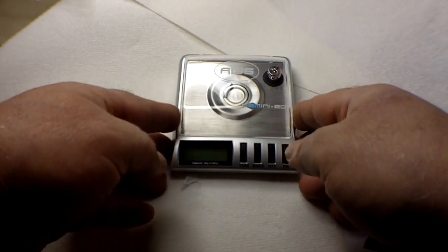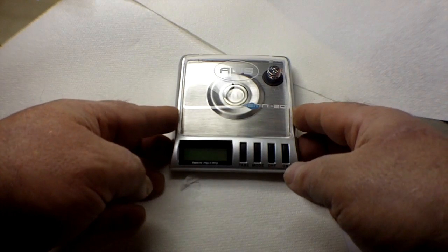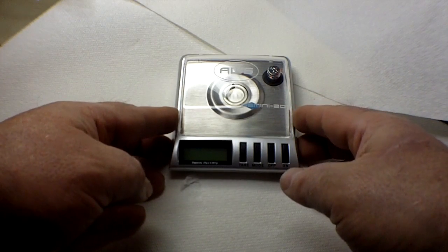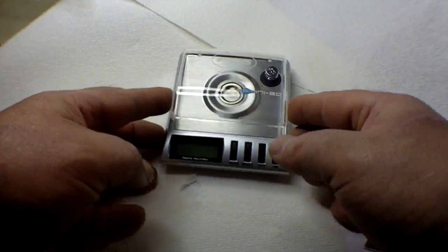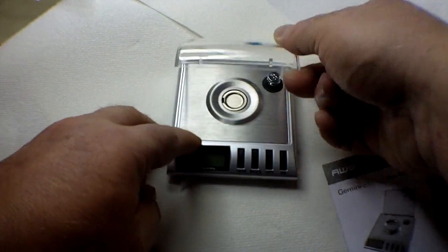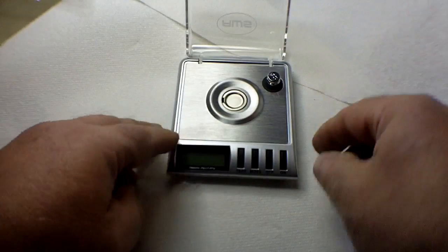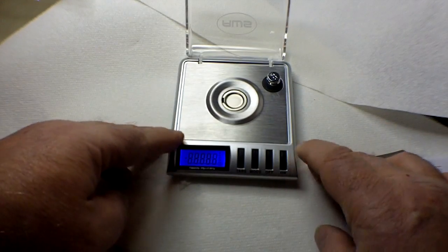It's got a little lid on it which is to shield from breezes and air movement which can affect the measurements. Let's turn it on.